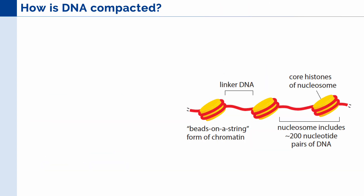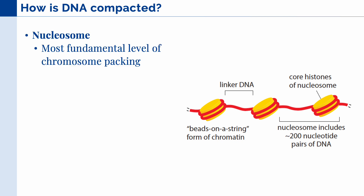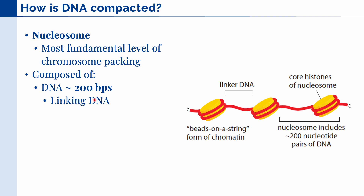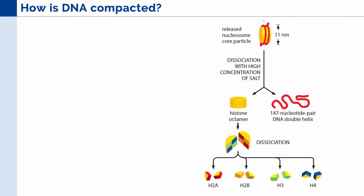Next, let's talk about how DNA is compacted. The most fundamental level of chromosome packaging is what we call the nucleosome, and we can see an example of that in this figure. The nucleosome is composed of DNA around 200 base pairs in length, which we can subdivide into either linking DNA and wound DNA. Linking DNA links two nucleosomes together, and wound DNA is the actual DNA that is wrapped around the protein, which we call the histone protein.